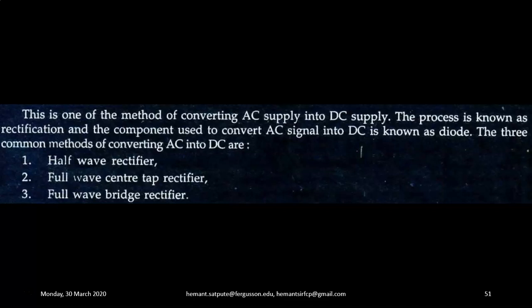The component used to convert an AC signal into DC is known as a diode. The three common methods of converting AC into DC are: Half-Wave Rectifier, Full-Wave Center Tap Rectifier, and Full-Wave Bridge Rectifier. We will be discussing these circuits later in a separate lecture.